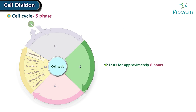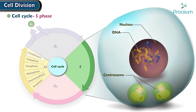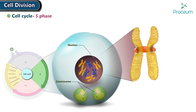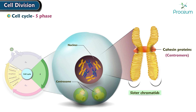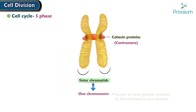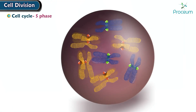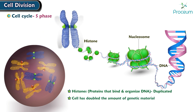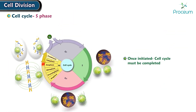S phase: This phase lasts for approximately 8 hours. During the S phase, the cell replicates its DNA so that by the end, each chromosome has two copies. The copies are attached to each other by cohesin proteins in a structure called a centromere, and together they are referred to as sister chromatids. Each pair of sister chromatids is considered one chromosome because they are copies of the same genetic material still attached to one another. Histones, the proteins that bind and organize DNA, are also duplicated. At this point, the cell has doubled its genetic material. Most mismatch repair takes place during the S phase, and once the S phase is initiated, it must be completed.